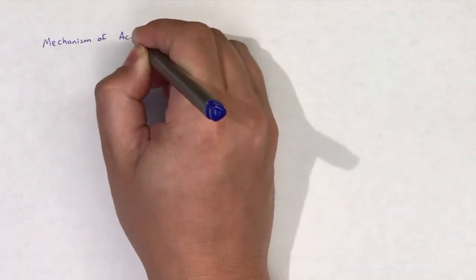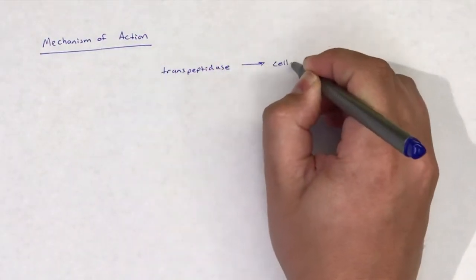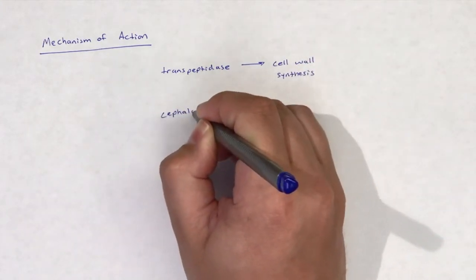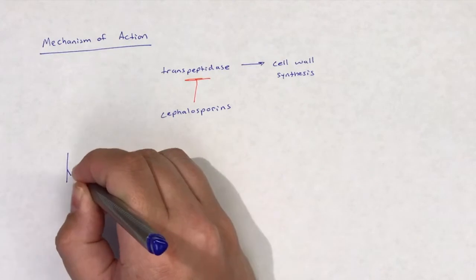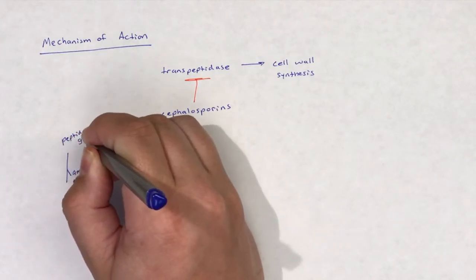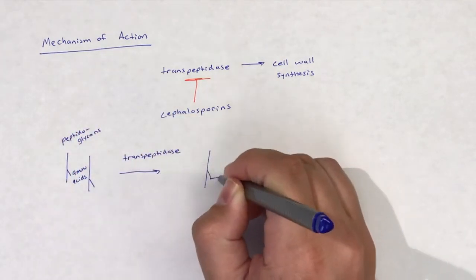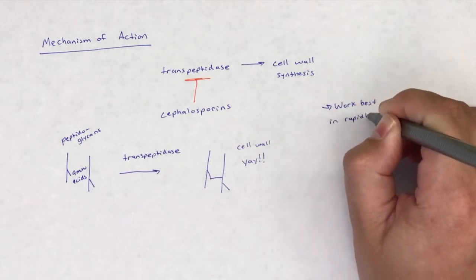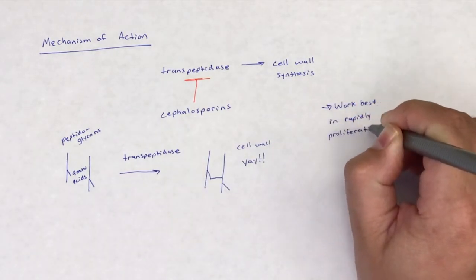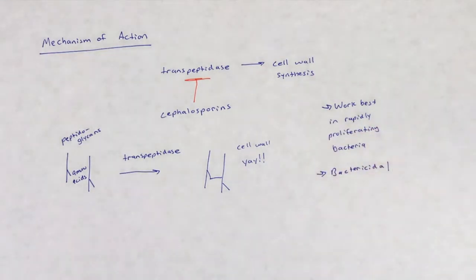The fifth-generation cephalosporins share the same mechanism of action as other cephalosporins. Cephalosporins kill bacteria by interfering with the transpeptidation reaction by binding to and inhibiting transpeptidase. Cephalosporins are cell wall synthesis inhibitors and are bactericidal. For more details on this mechanism, please refer to the video that focuses on cephalosporins as a whole.